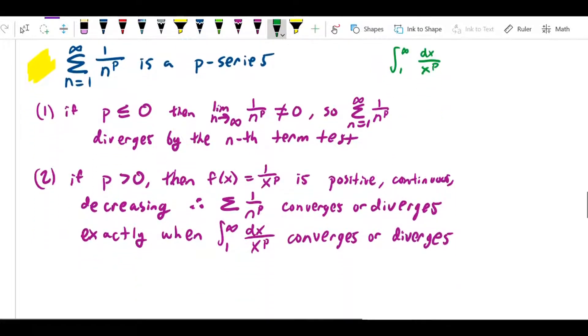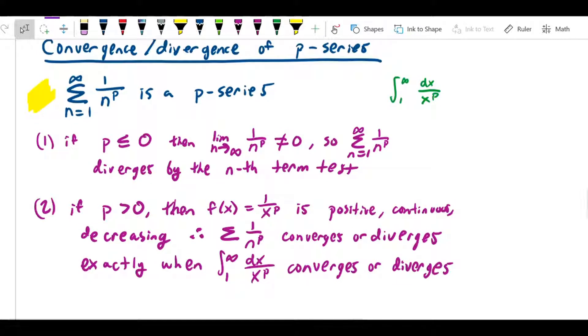The more interesting case is what happens if p is greater than 0. If p is greater than 0, then we can define f of x to be 1 over x to the p, because then 1 over n to the p is equal to f of n for all n greater than or equal to 1. I'm just replacing x with n. First of all, just note that this function is positive, continuous, and decreasing.